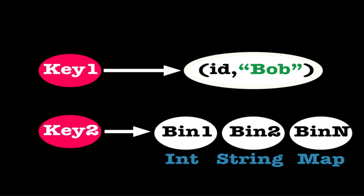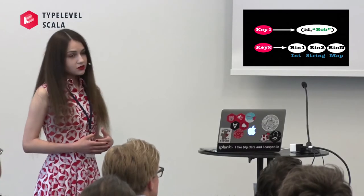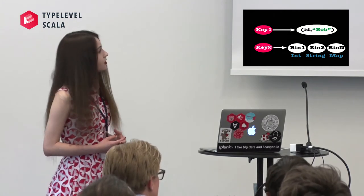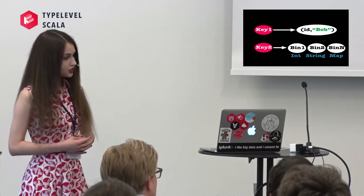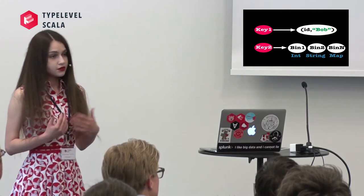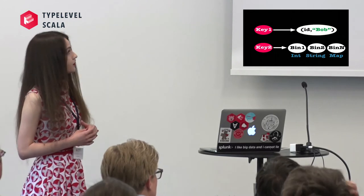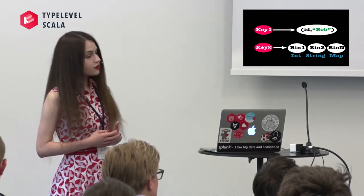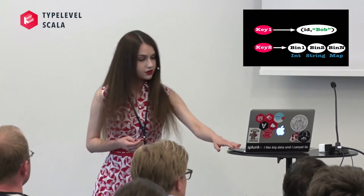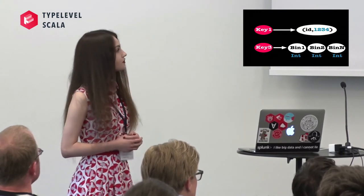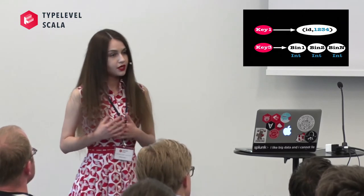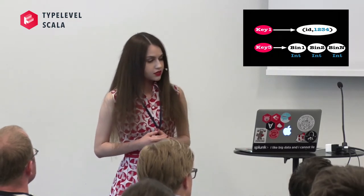Aerospike is a schemaless storage. If you want to change the type of data you don't have to modify a schema. Inner namespaces records belong to logical containers called sets. Every record has a key as a unique identifier, metadata like time-to-live, and bins with data. Information can be stored in one bin or different bins. They can have one type or different types, and the value of a bin can always change — for example, a bin with a string value can change to a different string or even to a different data type such as integer.